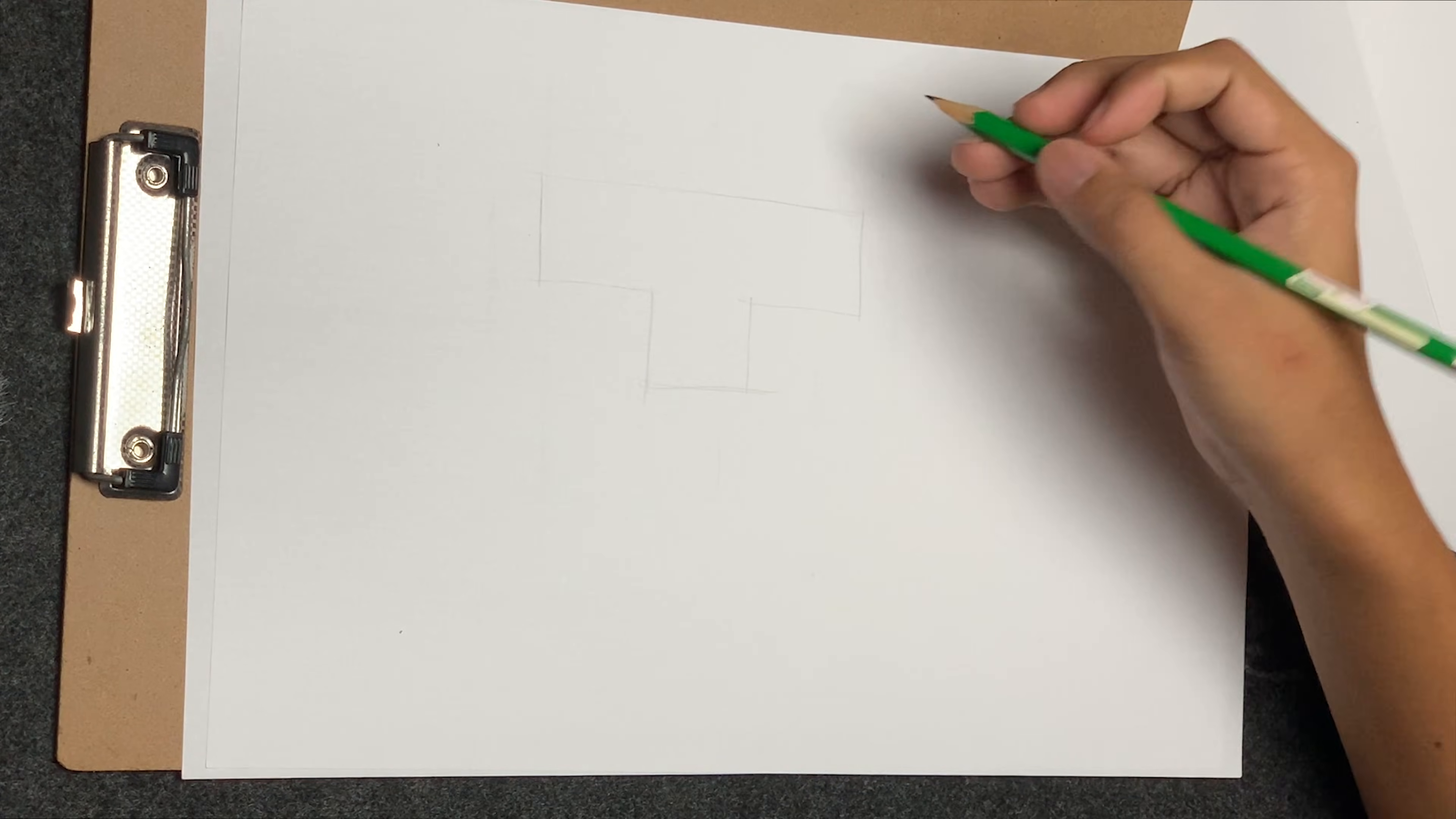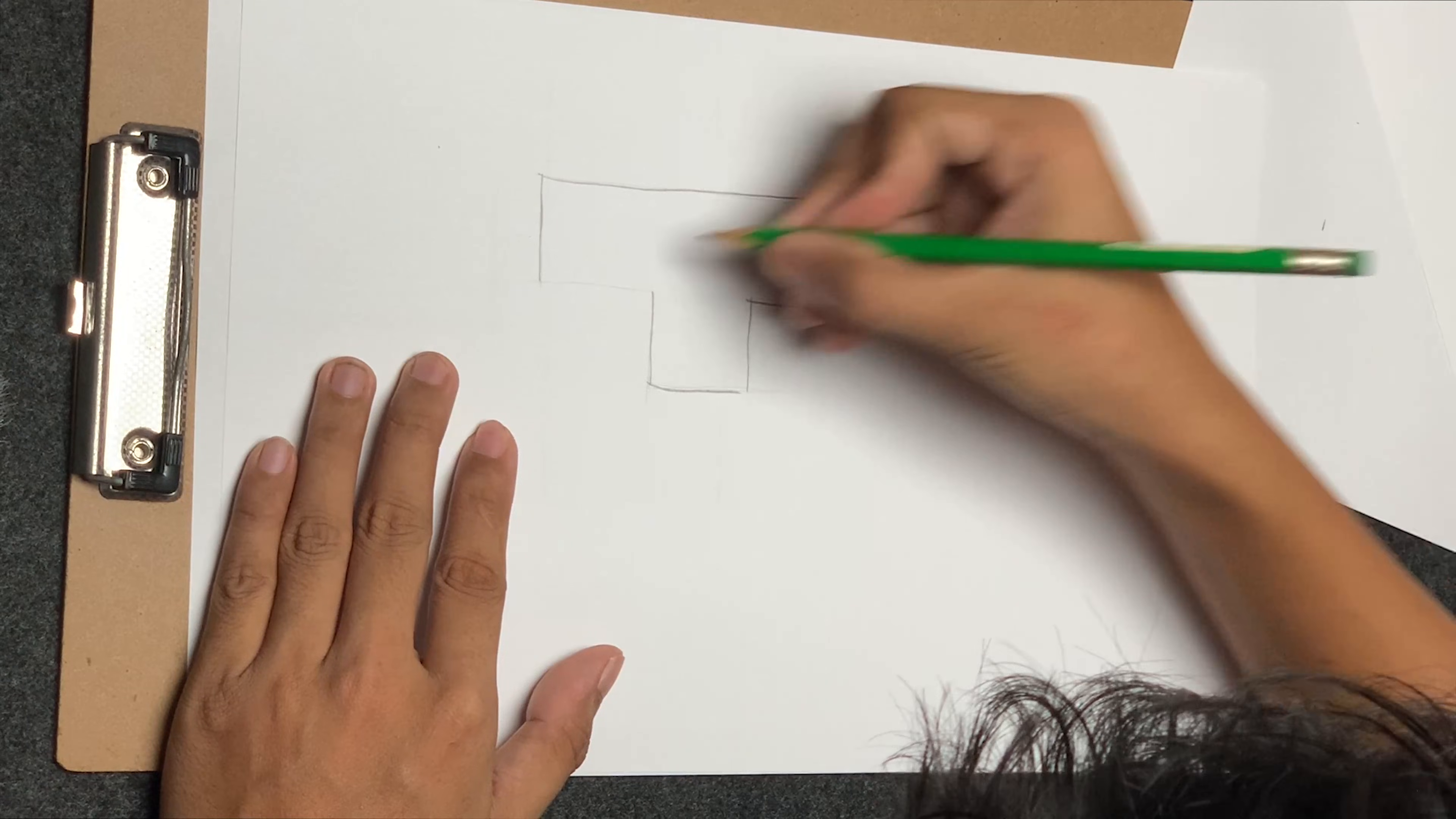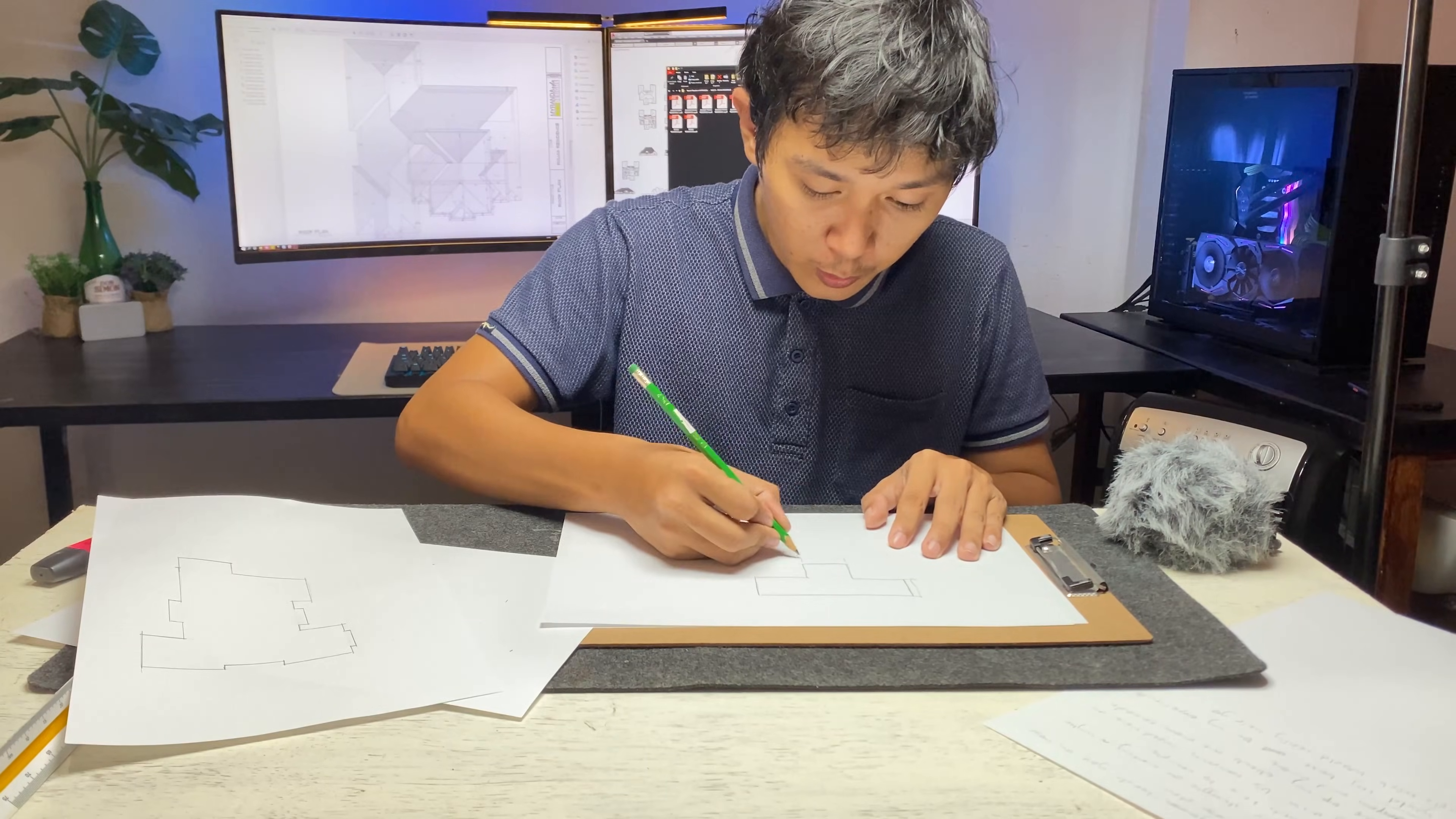Whenever you make a floor plan, make sure you start with the outline. Let's say this is the shape of your house. If you have a plan, make sure the measurements of these walls, if you can make it equal, that's better.